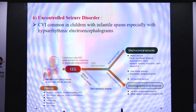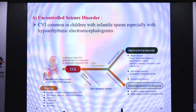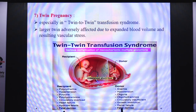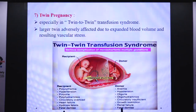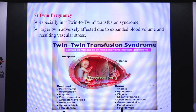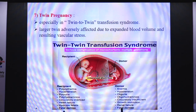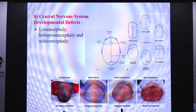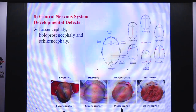Uncontrolled seizure disorder is notable — CVI is very common in children with infantile spasm, especially in hypsarrhythmia electroencephalograms. Twin pregnancy, especially in twin-twin transfusion syndrome, is another interesting cause — the larger baby is most often affected by CVI because the larger twin is adversely affected due to expanded blood volume resulting in vascular stress. Certain cranial nervous system developmental defects like lissencephaly, holoprosencephaly, and schizencephaly have also been associated with CVI.